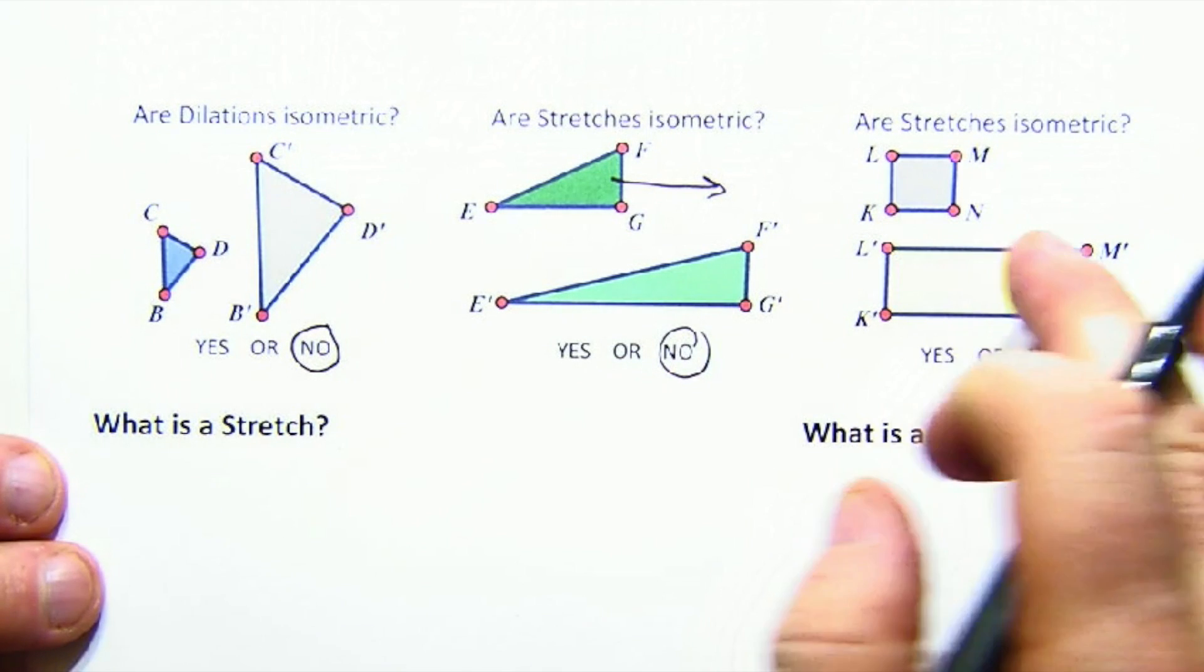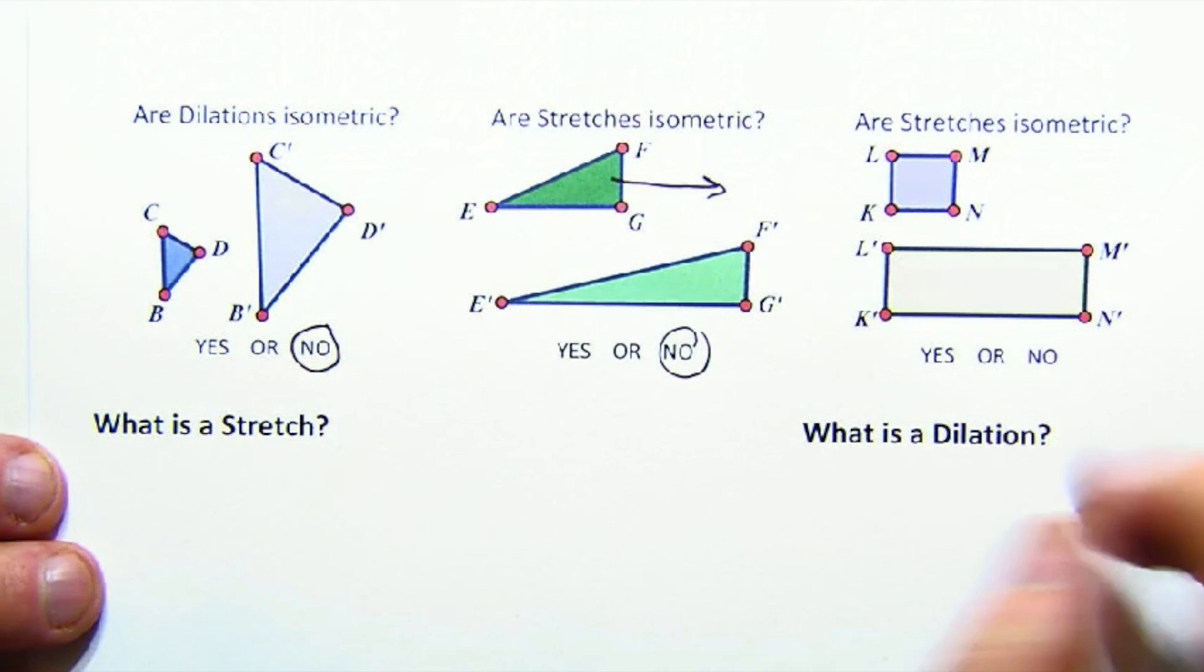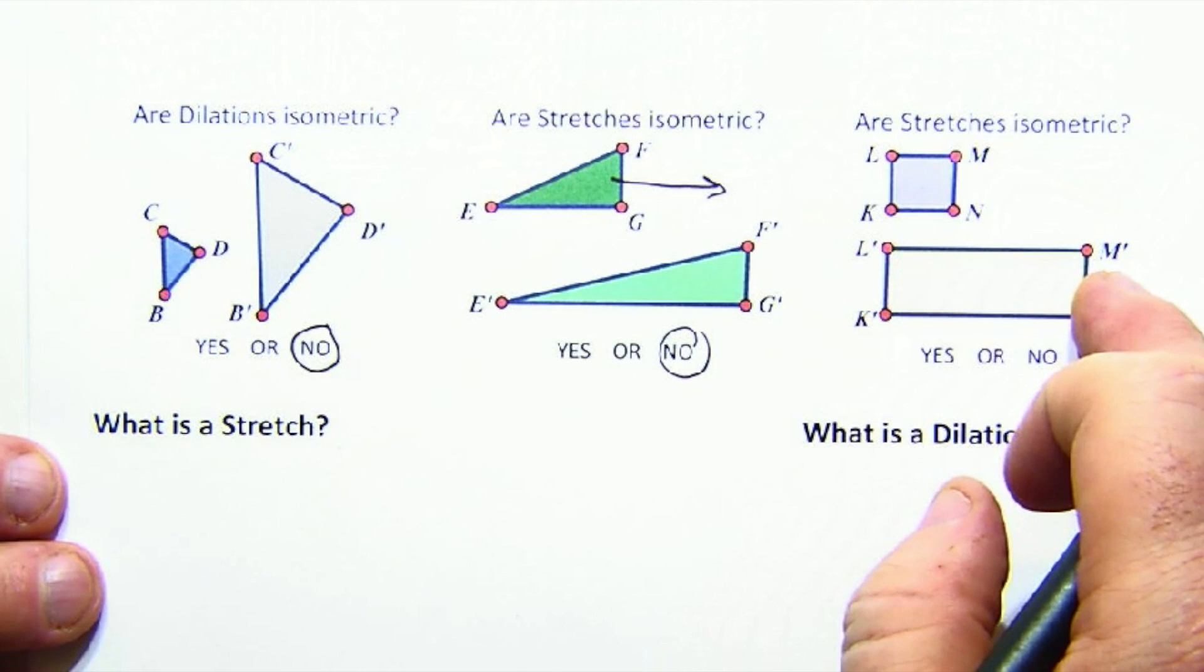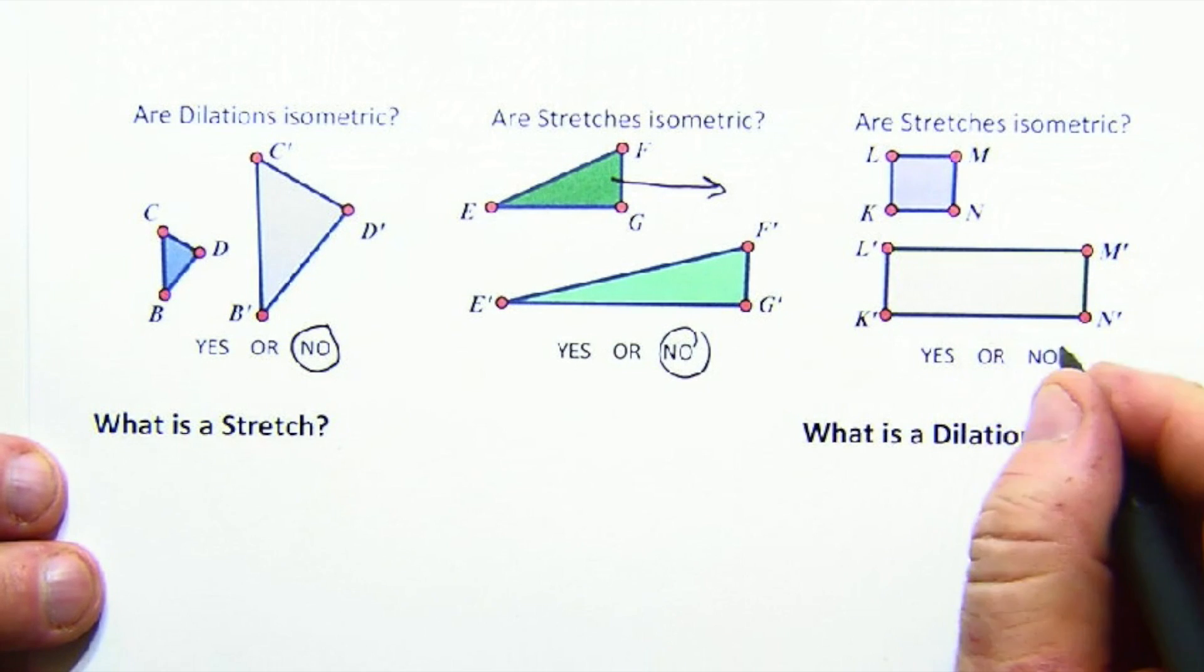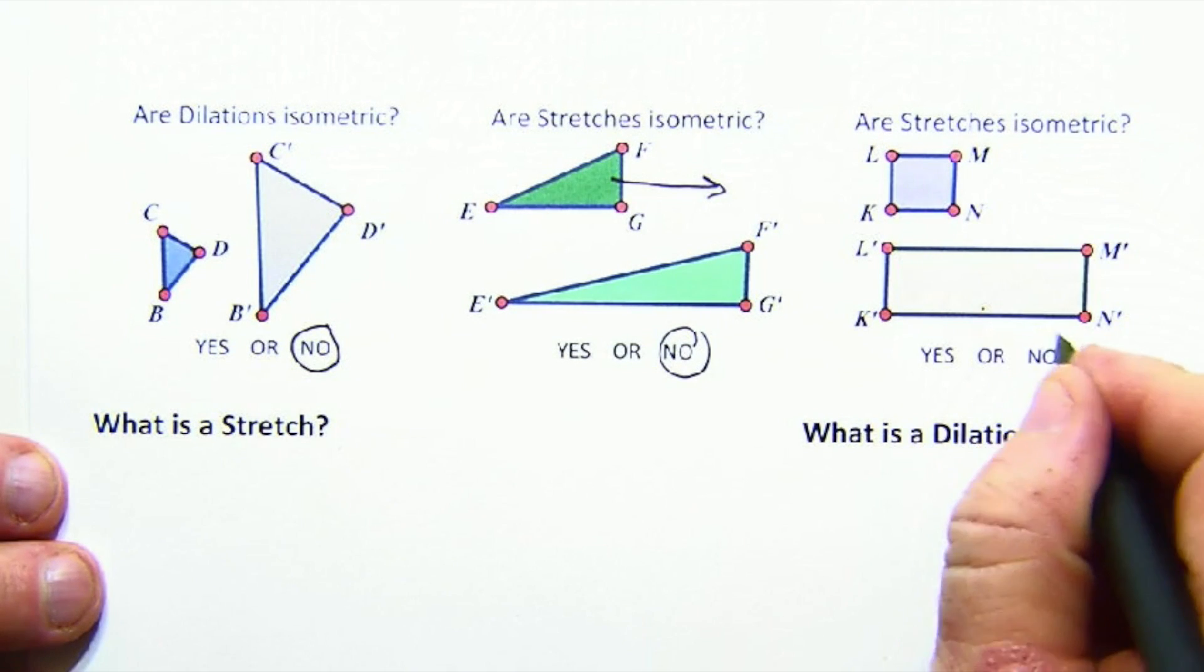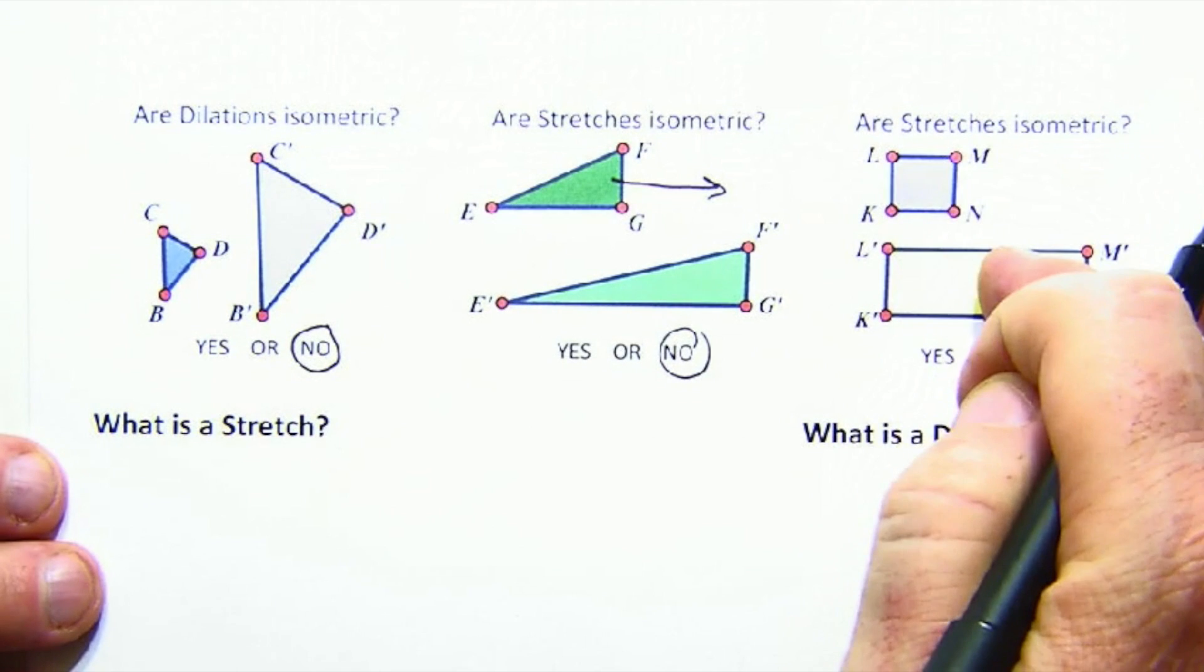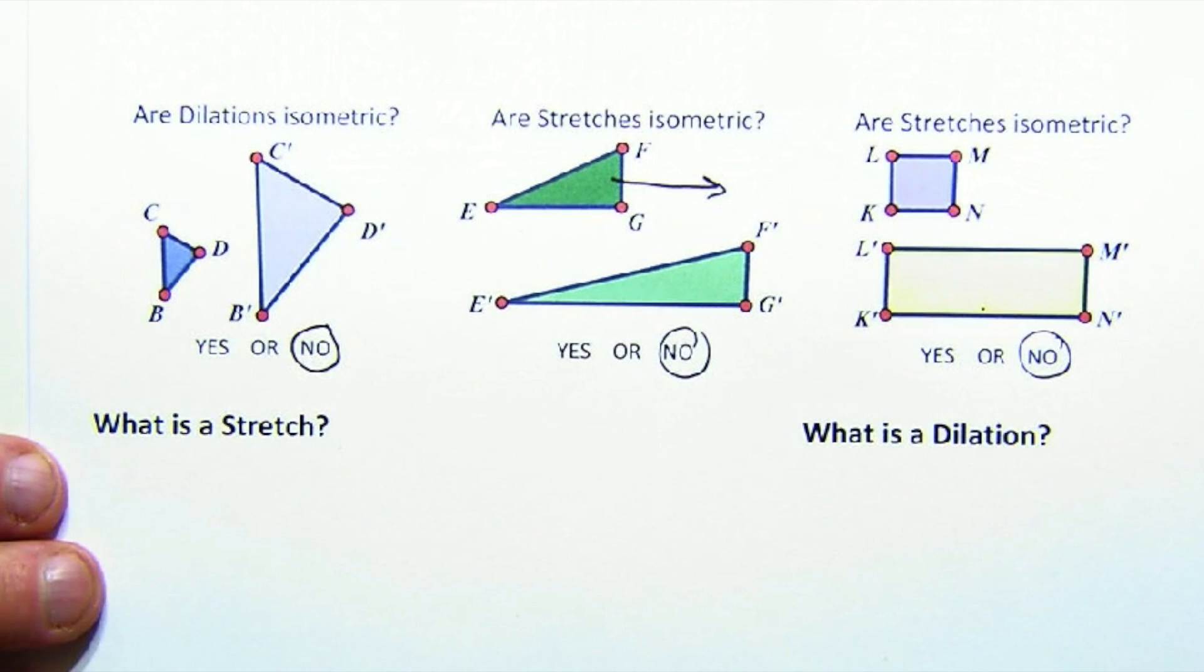And again, a similar example: a rectangular shape getting pulled one singularly dimensional and not changing its height at all. So while they're both rectangles, they are not the same because that's what isometric means, so it's not isometric.